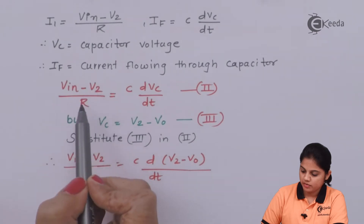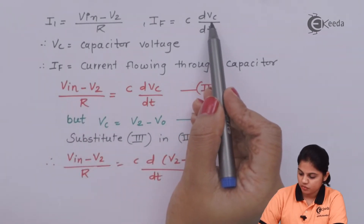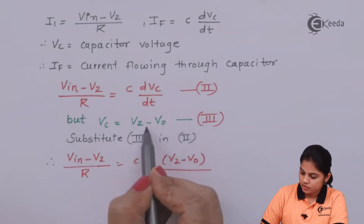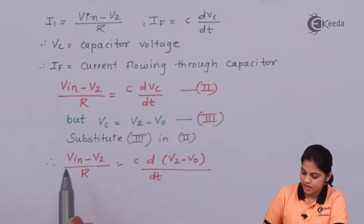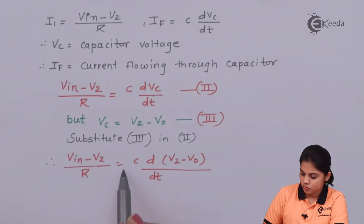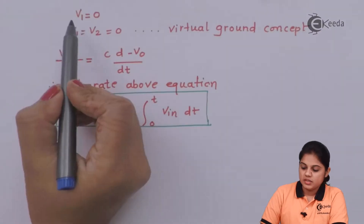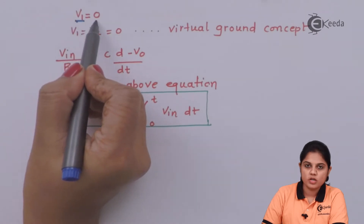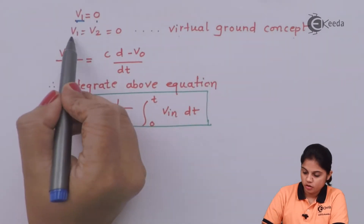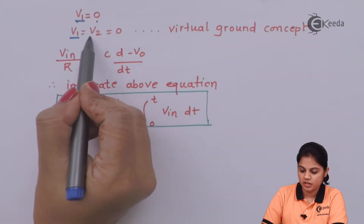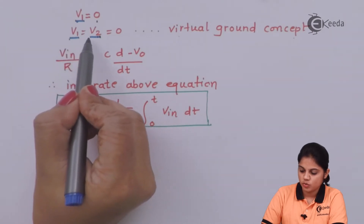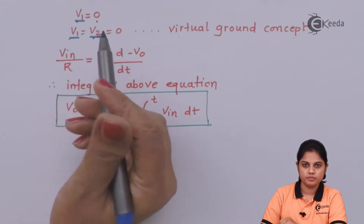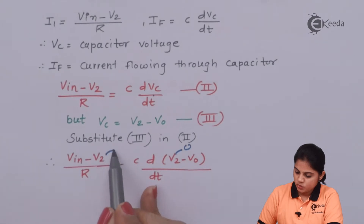Now Vc, the capacitor voltage, can be written as Vc = V2 − V0. Substituting this gives: (V-in minus V2) / R = C × d(V2 minus V0)/dt. Since the non-inverting terminal V1 is grounded, V1 = 0. By the virtual ground concept, if the non-inverting terminal is at 0 potential, the inverting terminal will also remain at 0 potential. So V1 = V2 = 0.